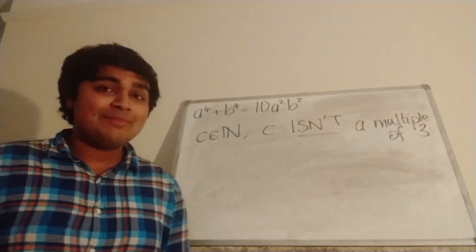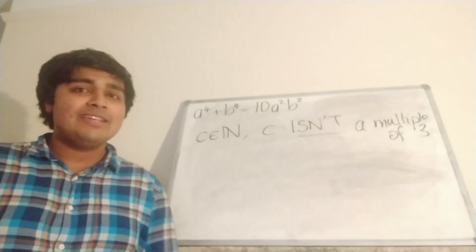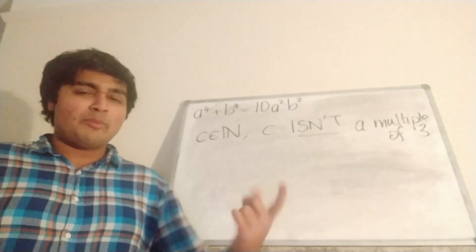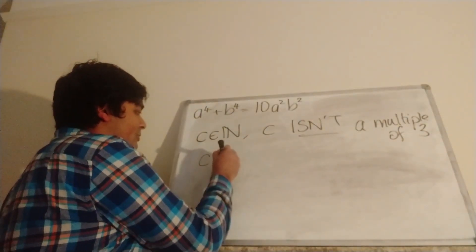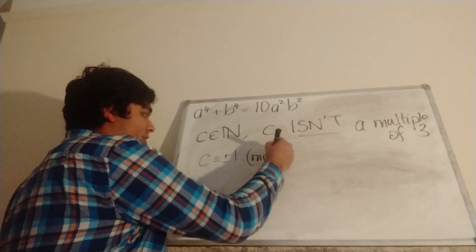And C isn't a multiple of 3. So that means if we look at C mod 3, it's either 1 or 2. But remember 2 we can write as -1. So in fact, C is congruent to ±1 mod 3.